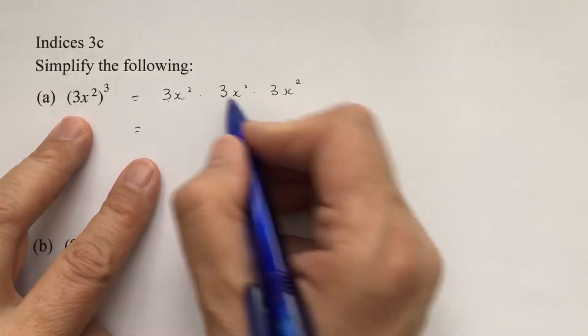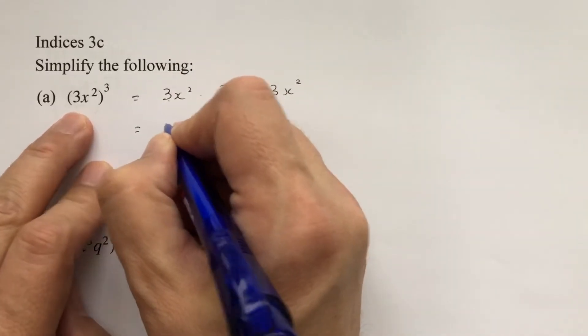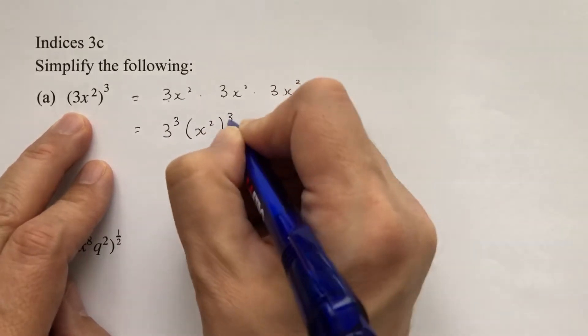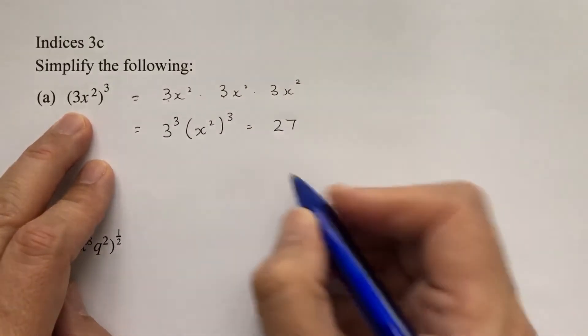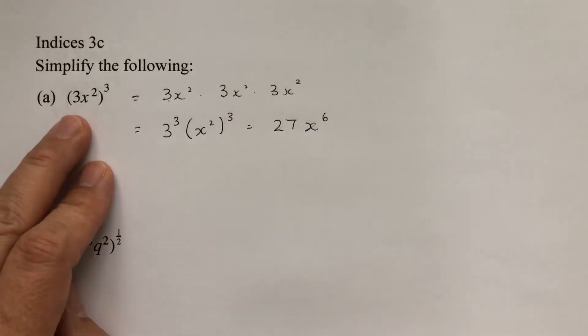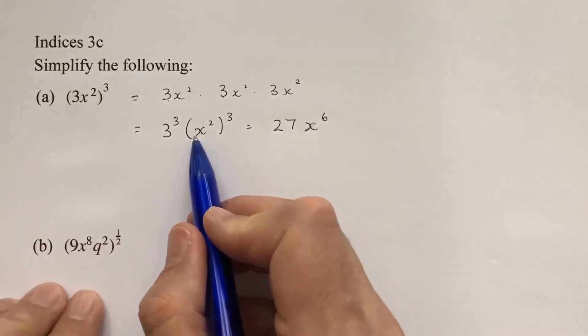But really we've got 3 cubed here, so we want to cube the 3 and cube the x squared. 3 cubed is 27, x squared cubed is x to the power of 6. So really you want to jump to this stage if you can.